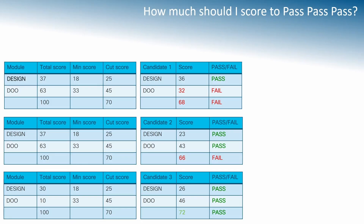To pass the exam, there is a minimum number of points you have to score. The exam has a total of 100 points: 37 on Design and 63 on Configuration. For each module there is a minimum — Design has a minimum of 18 and Configuration has a minimum of 33. Scoring below these numbers means you will fail.